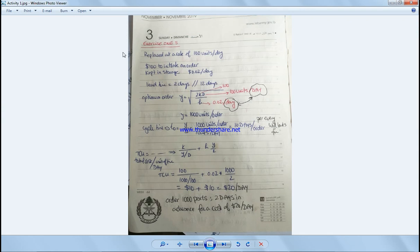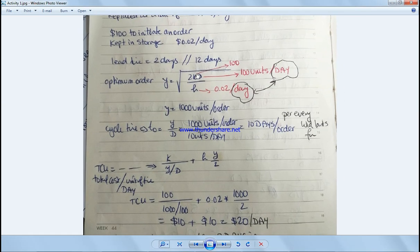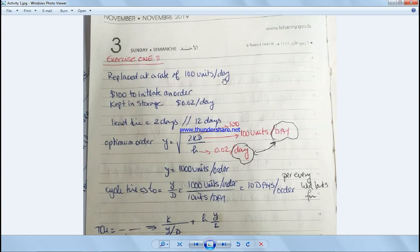So we start with: they've been replaced at the rate of 100 units per day, as you would see here. It costs $100 to initiate an order, they keep them in storage at this amount, and the lead time is two days.